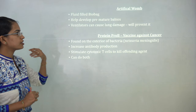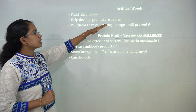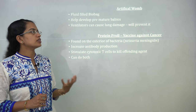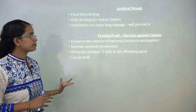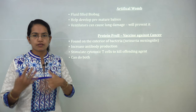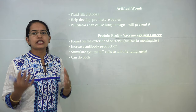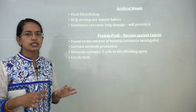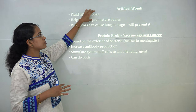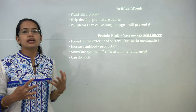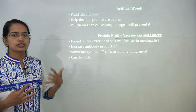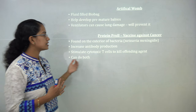An artificial womb has been created, which is a significant landmark. It would help develop premature babies — until now, premature babies were kept on ventilators, which badly affected their lungs. This artificial womb is a fluid-filled bio-bag that mimics natural conditions and does not damage the lungs as ventilators do.